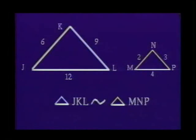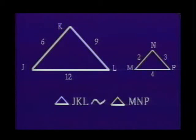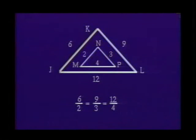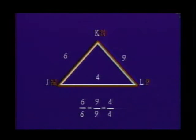We can write that triangle JKL is similar to triangle MNP. If triangles are similar, then their sides must be proportional. If that ratio is one to one, then our similar triangles are also congruent. Thus all congruent triangles are similar, but not all similar triangles are congruent.